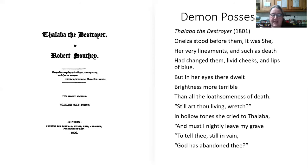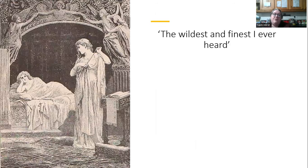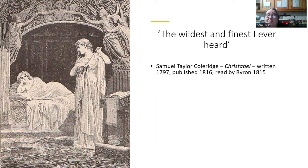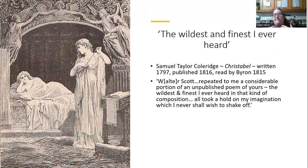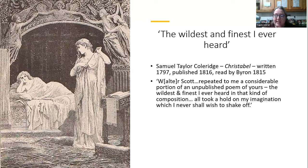Another vampire poem Byron read was Christabel by Samuel Taylor Coleridge, which he describes as one of the wildest and finest poems he'd ever heard. Written in 1797 but not published until 1816, Byron had access to a copy — perhaps orally — in 1815 via Walter Scott, and wrote to Coleridge: 'Walter Scott repeated to me a considerable portion of an unpublished poem of yours, the wildest and finest I ever heard in that kind of composition. All took hold of my imagination which I never shall wish to shake off.' Worth noting: this is 1815, after he wrote the Giaour but before some other vampire-connected incidents.